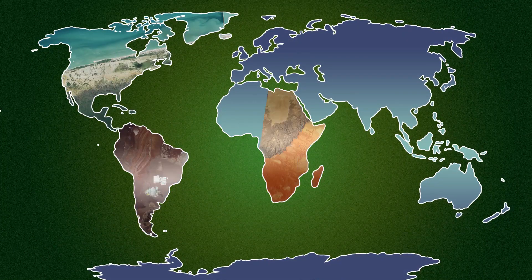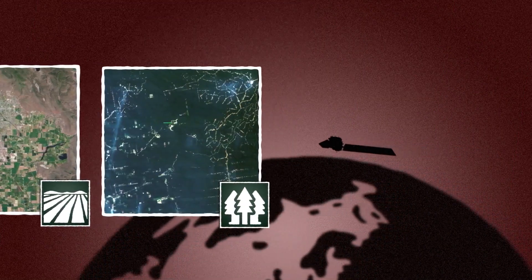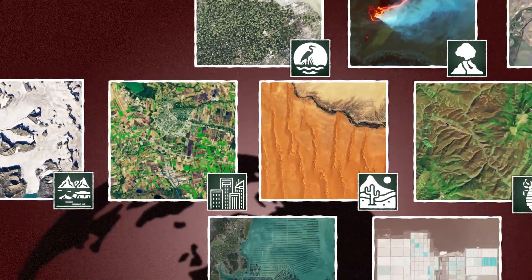Landsat collects images of each of our planet's seven continents. Farms, forests, waterways, glaciers, urban areas. Landsat sees it all.